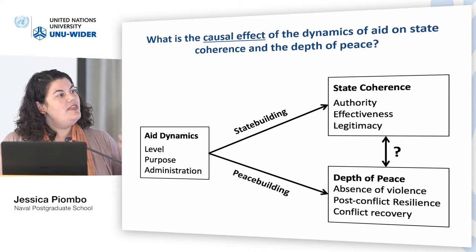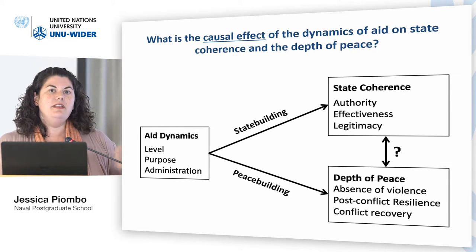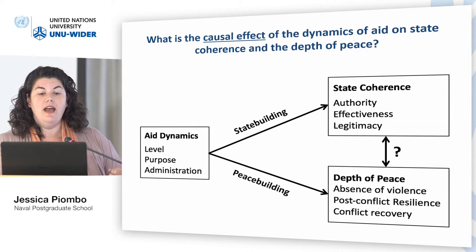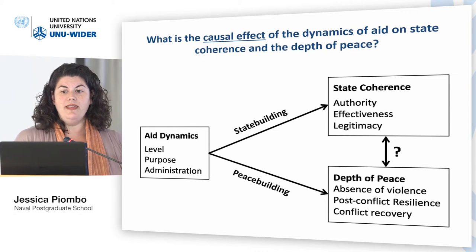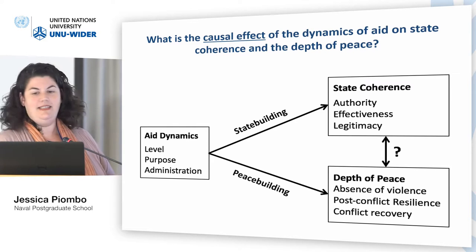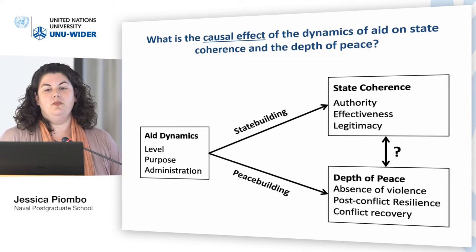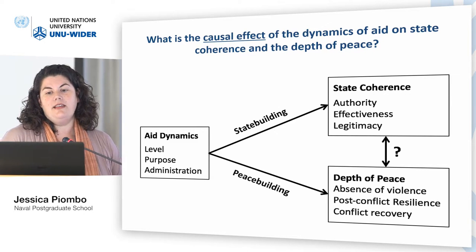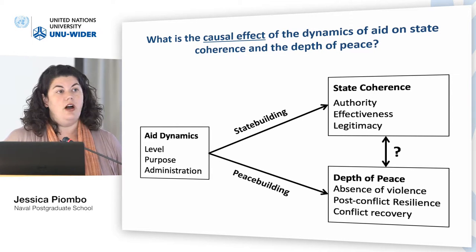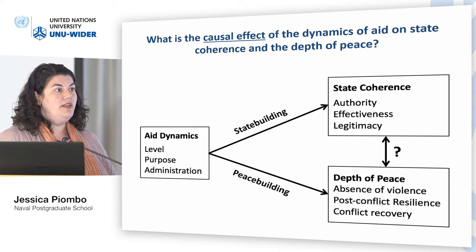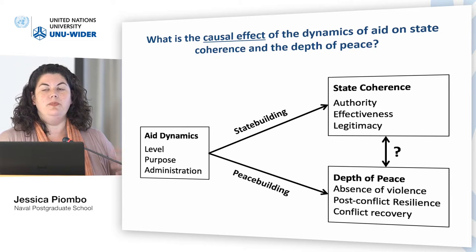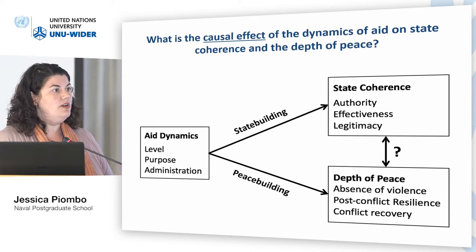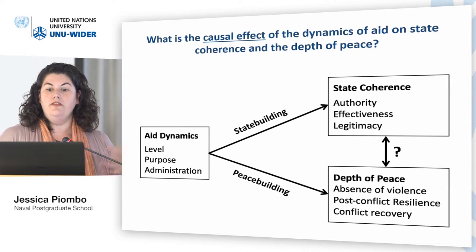The administration of aid covers both the systems of administration within development partner organizations and the systems of administration within recipient countries — that give-and-take dynamic between the outsiders and the insiders, what are the systems of aid administration, are they used or bypassed, and all of that. Within state coherence, it was actually really great to hear David Carment talk about capacity, authority, and legitimacy, because we've developed a parallel set of authority, effectiveness, and legitimacy. They pretty much cohere with what he was talking about, except where he says capacity, we say effectiveness. Authority is basically a rule-of-law type of dynamic — does the state have the ability to create decisions and enforce them? Effectiveness is: in the arenas in which it chooses to be active, is it able to be active effectively, does it have capacity?